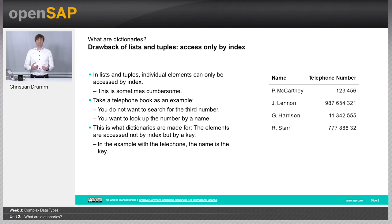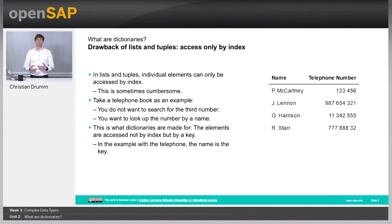So far we have worked with lists and tuples. But what are the drawbacks of lists and tuples? In lists and tuples, it's only possible to access the individual elements using an index. This can be sometimes a little bit cumbersome. As an example, consider a telephone book. In a telephone book, you don't want to look for the third entry or the ninth entry. Instead, you want to search for the telephone number with a given name. And that's exactly what dictionaries are for.